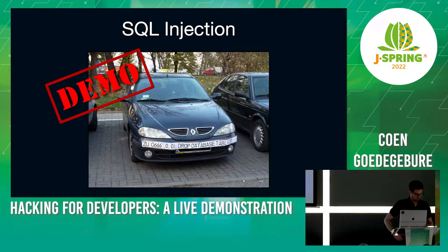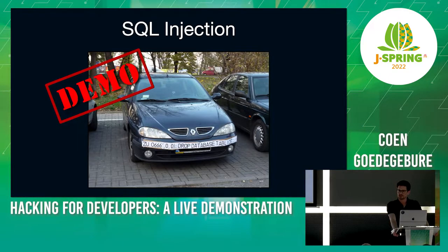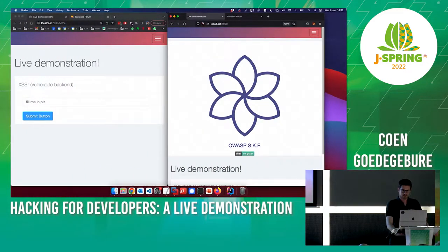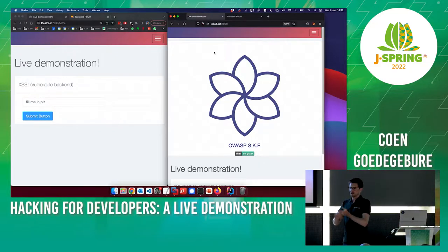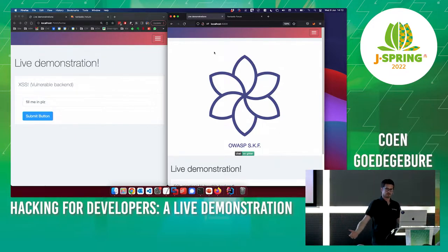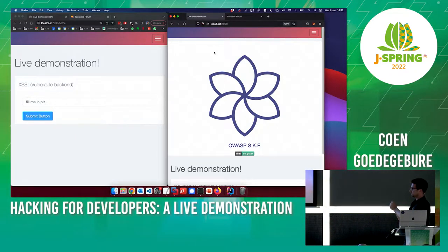SQL injection demo. By the way, the famous 'Bobby Tables' license plate — I heard it's Yugoslavian: 'Tablici,' right? It selects this license plate, drop database, license plates. Creative. I borrowed this demo from OWASP SKF — the Security Knowledge Framework. I really recommend this; they have a large set of vulnerable pages for specific vulnerabilities. I modified it so I can use it and show you what's going on.